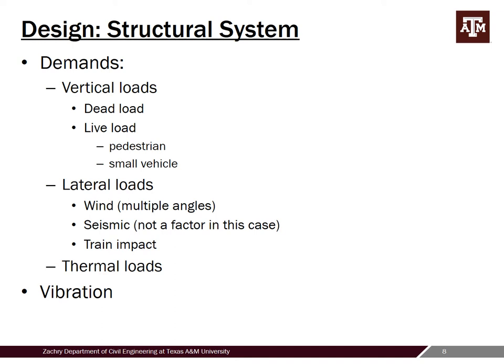The vehicle load depends on access to the facility. In this case there were no bollards, but the turning radius and width were such that only a certain size vehicle could get on the facility, so we designed it for a smaller truck. In the end, pedestrian live loading controlled in terms of vertical load demands. Wind was a big lateral load that changed a lot of the design — looking at multiple attack angles, it did drive a lot of the lateral design. Seismic was not a big issue here. Being in close proximity to a rail line, you also have to account for train impact force or provide a crash wall.